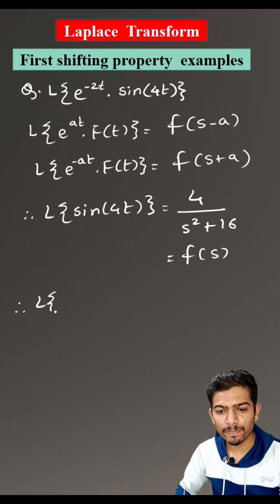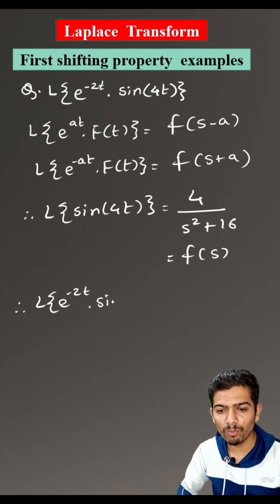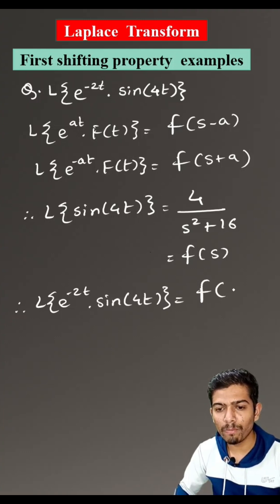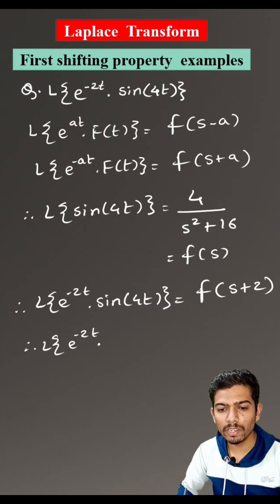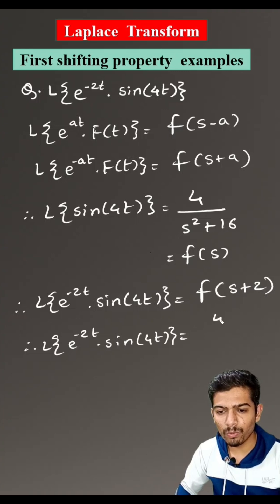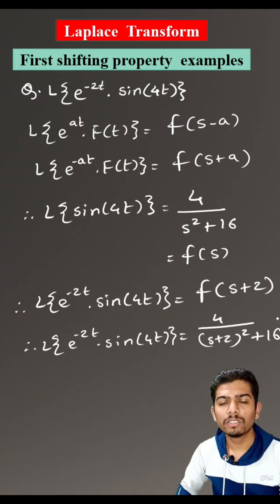Therefore, the Laplace transform of e raised to minus 2t into sin(4t) is equals to f(s plus 2). Therefore, the Laplace transform of e raised to minus 2t into sin(4t) is equals to 4 divided by (s plus 2) squared plus 16.